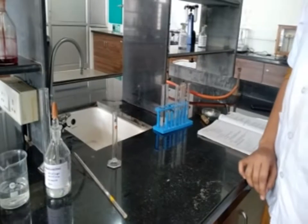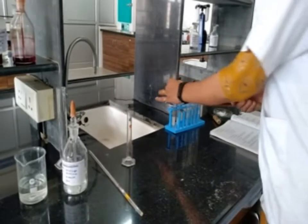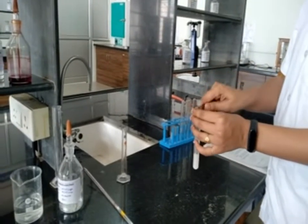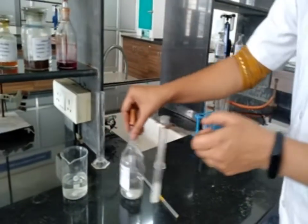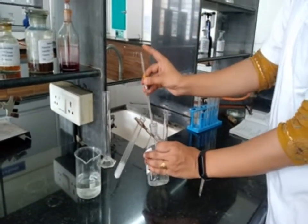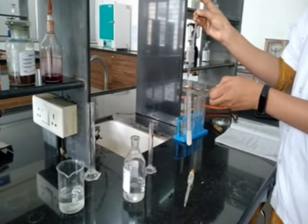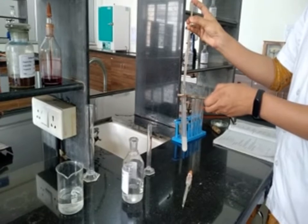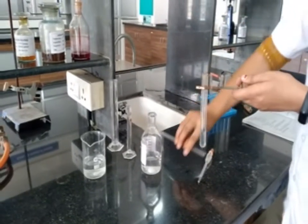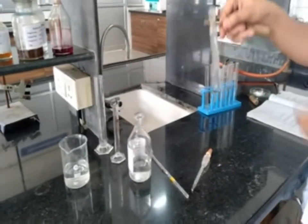Now, test B. To the saturated solution of the drug. This is our saturated solution of given drug. Add 1 drop of sulfuric acid. After addition of 1 drop of dilute sulfuric acid, we got a slight blue colored fluorescence.